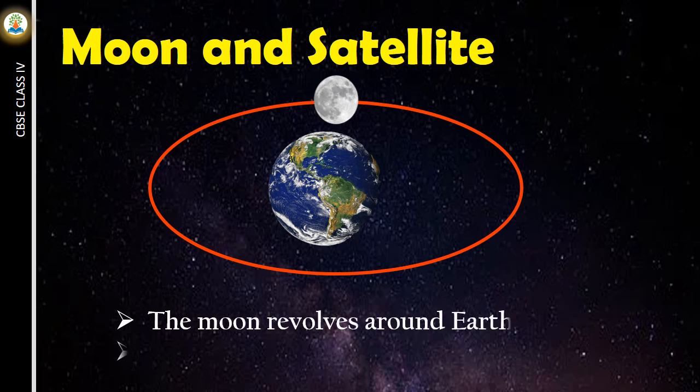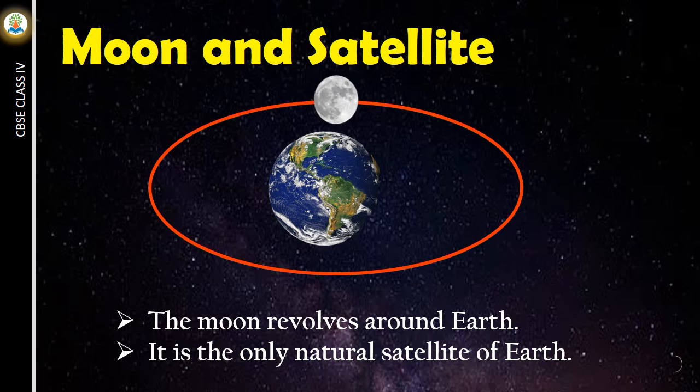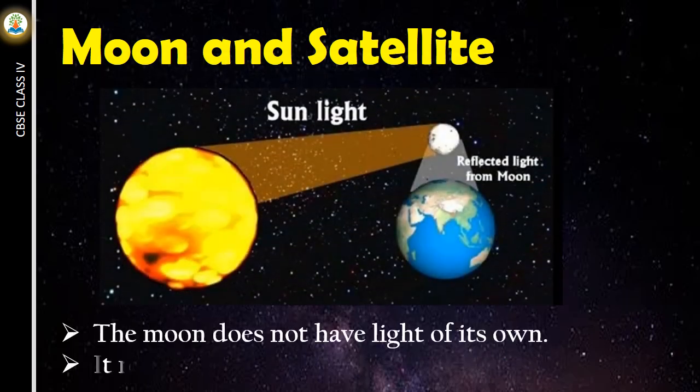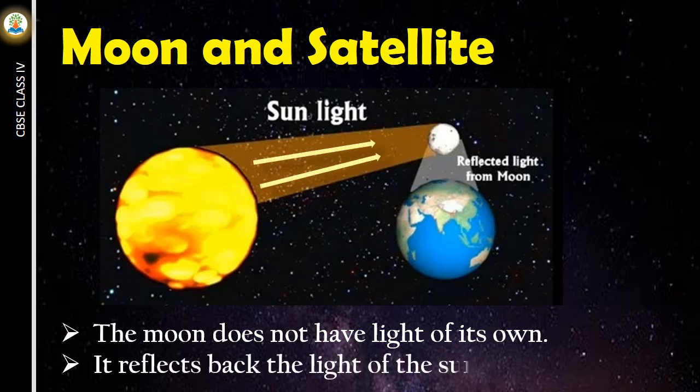The moon revolves around Earth. It is the only natural satellite of Earth. The moon does not have light of its own. It reflects back the light of the sun falling on it.